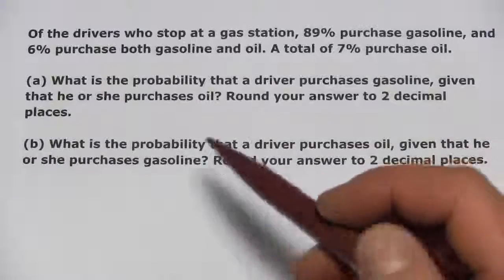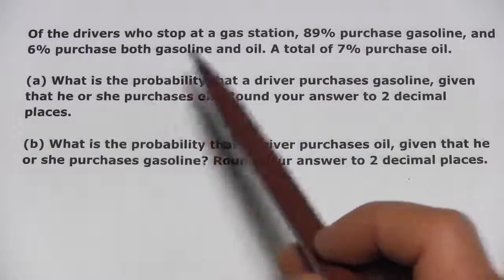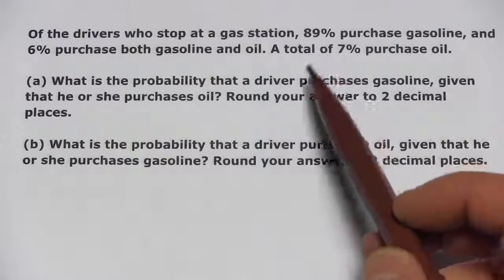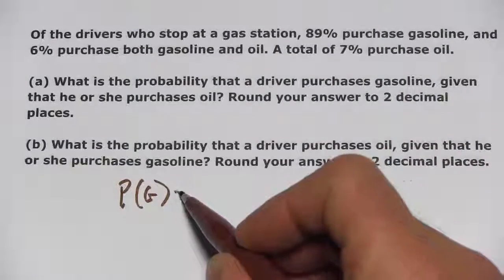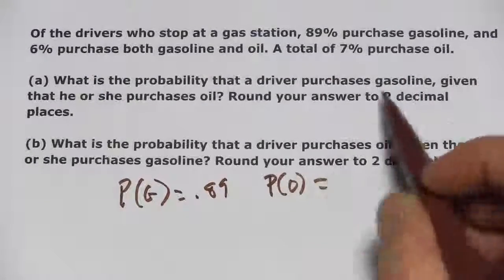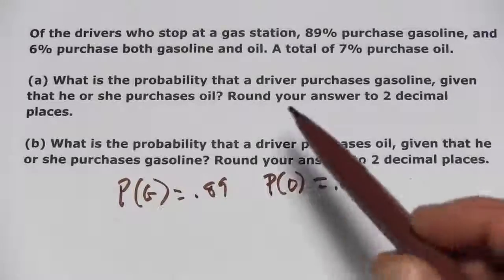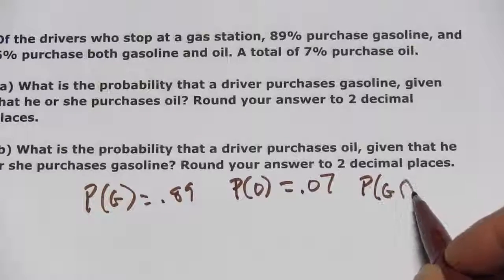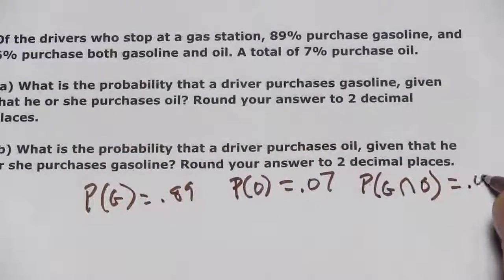Let's look at another one. This problem says: of the drivers who stop at a gas station, 89% purchase gasoline and 6% purchase both gasoline and oil, and a total of 7% purchase oil. So we've got two things: the probability of purchasing gasoline is 0.89, the probability of purchasing oil is 0.07, and the probability of the intersection — people who purchase both gas and oil — is 0.06.